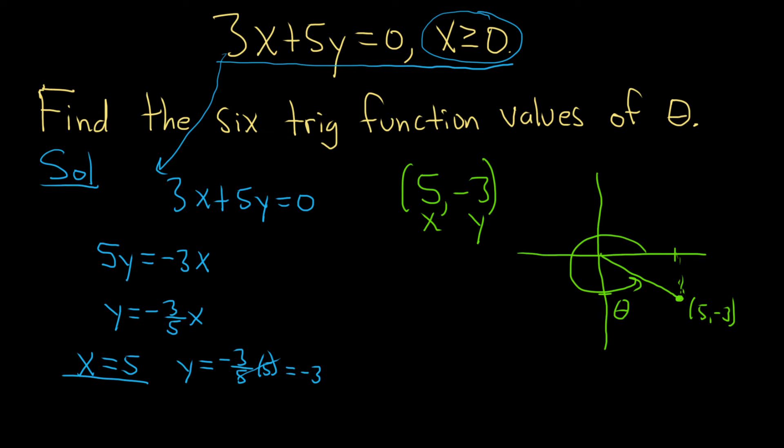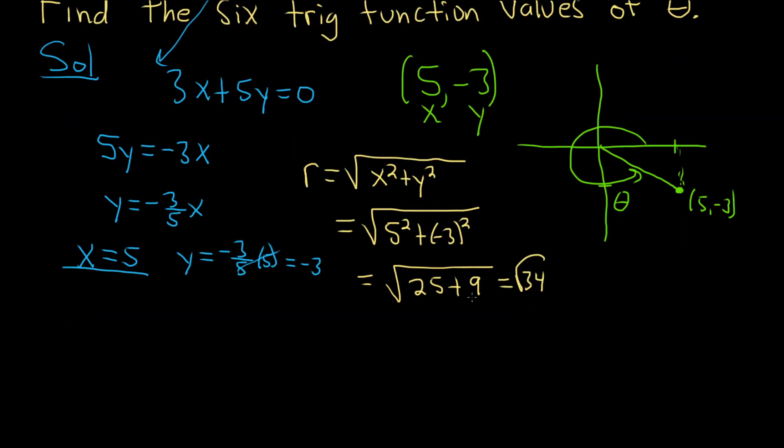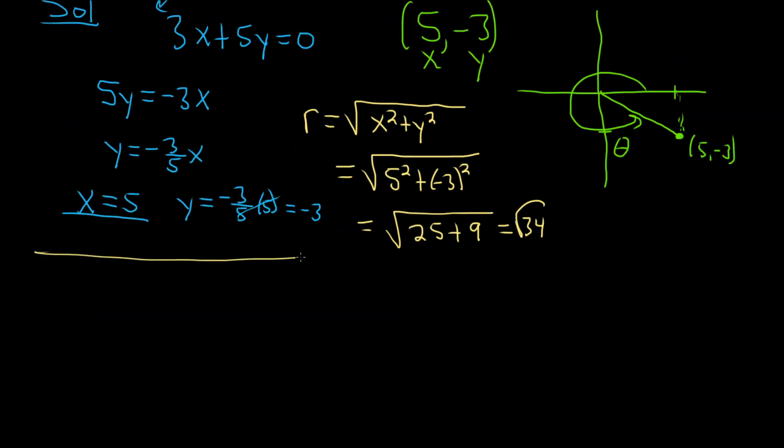So there is a formula that we can use to find r, which is the first thing we should always find in these problems. r is equal to the square root of x squared plus y squared. So that's equal to the square root of, so x is 5, so this will be 5 squared plus, and then y is negative 3, so negative 3 squared. So this is equal to the square root of 25 plus 9, so you just get the square root of 34, not a really nice number, but we will work with it. So now we can write the answers down.